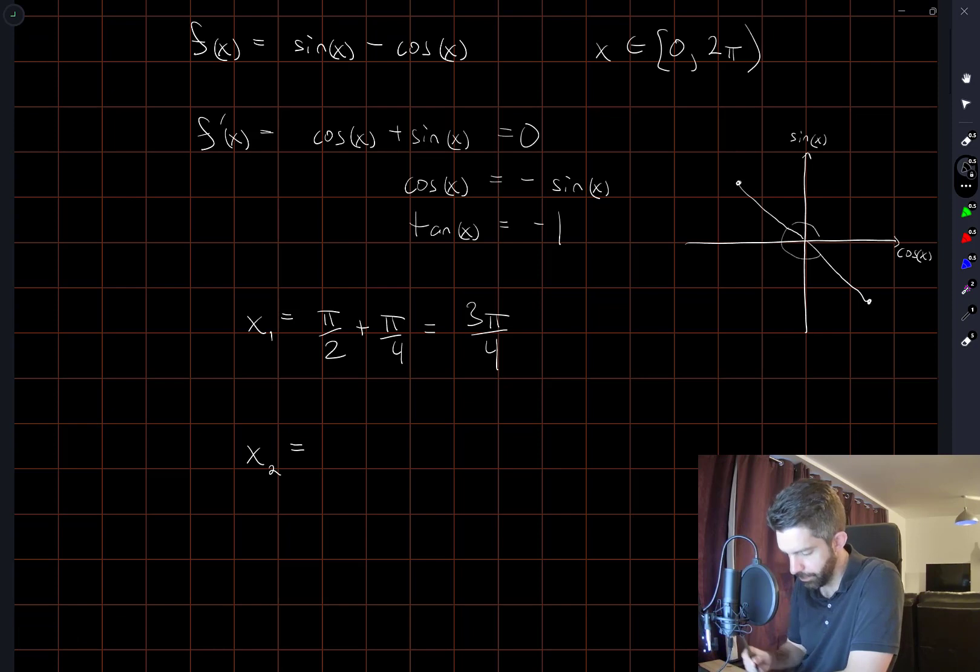And the other root, x2, will be equal to 2π minus π over 4, which is 7π over 4.